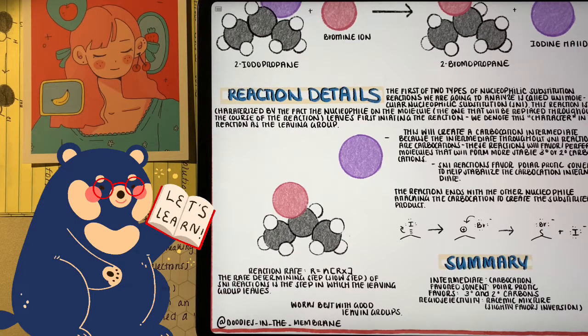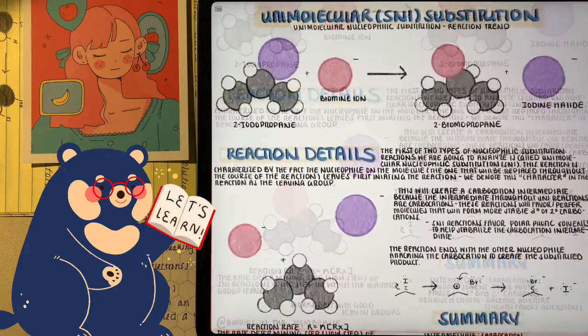Now that we've done the reaction once, let's look over some summary stuff. The intermediate formed throughout SN1 reactions is a carbocation. They favor polar protic solvents because it will help stabilize the intermediate, which is the carbocation, and through the acidic hydrogen. It favors formation of tertiary and secondary carbocations, and the stereoselectivity is racemic, even though we have a slight, slight favoring for inversion. It's a two-step pathway, but the kinetics is only dependent on the leaving group leaving. So that's why we call it the rate determining step.